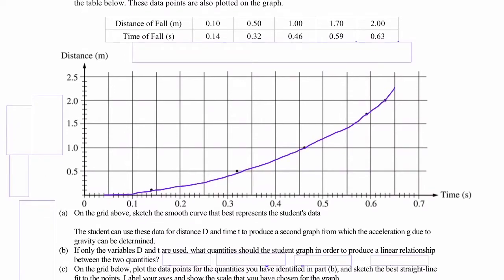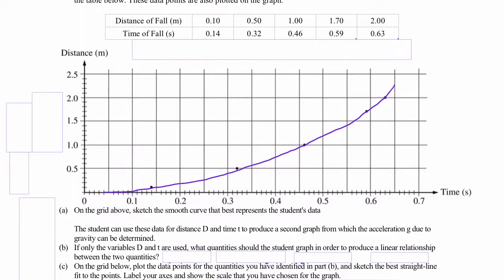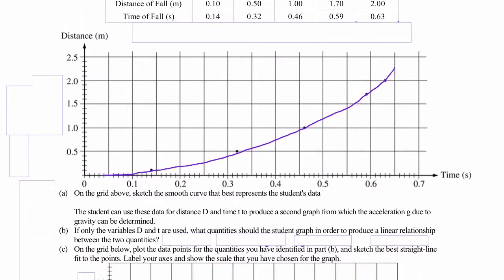The student can use these data for distance d and time t to produce a second graph from which the acceleration g due to gravity can be determined. If only the variables d and t are used, what quantities should the student graph in order to produce a linear relationship between these two quantities? So anytime you're asked about a linear relationship, we're going to want to find an equation that matches y equals mx plus b.